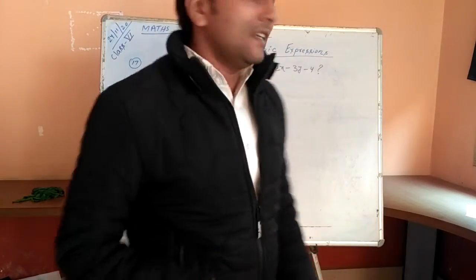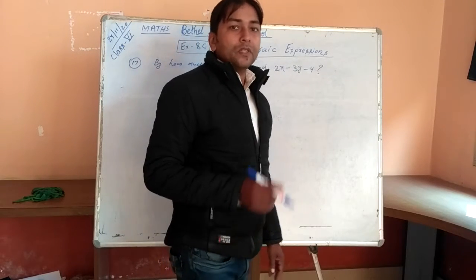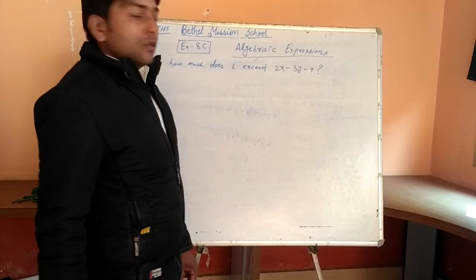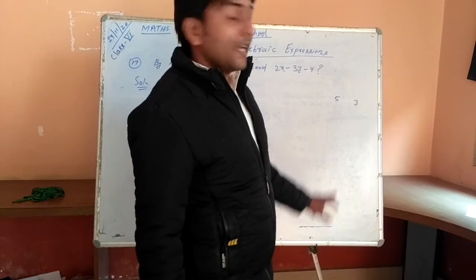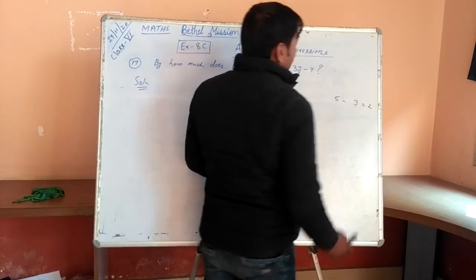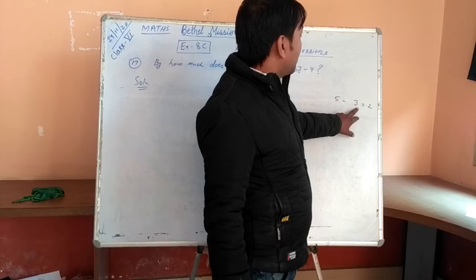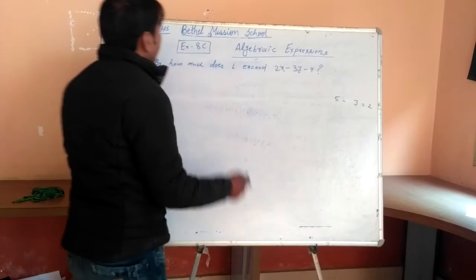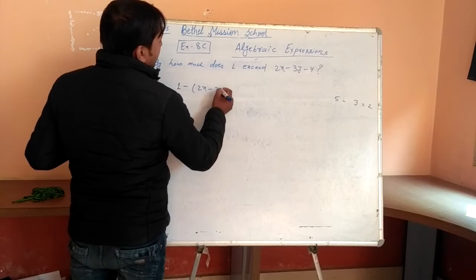Now I have taken question 17: By how much does 1 exceed 2X minus 3Y minus 4? By how much exceed? So if you ask: there is 5 and there is 3, how much bigger is 5 than 3? You subtract and you get 2. It says that 5 is bigger than 3 by 2. So you have to find out that difference. So now, you have to subtract: 1 minus this one, which is 2X minus 3Y minus 4.